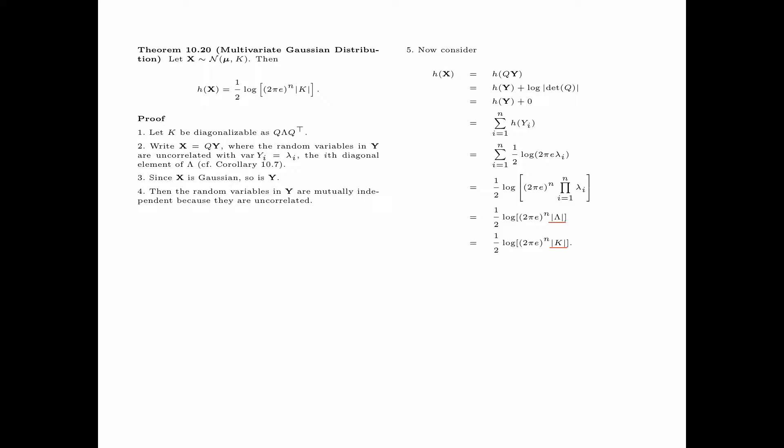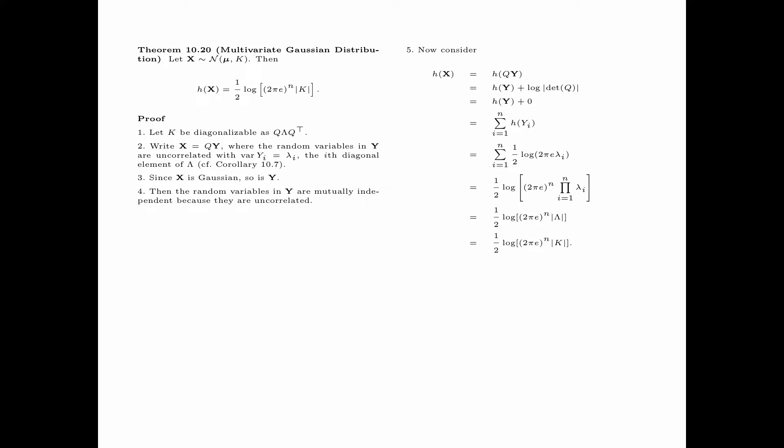We claim that the determinant of lambda equals the determinant of K. Recall that K is diagonalized as Q times lambda times Q transpose. So the determinant of K equals the determinant of Q times the determinant of lambda times the determinant of Q transpose. Since Q and Q transpose have the same determinant, we have the square of the determinant of Q times the determinant of lambda. Since the determinant of Q equals plus or minus 1, its square equals 1, and therefore the determinant of K equals the determinant of lambda. This completes the proof of the theorem.